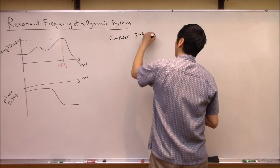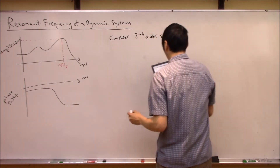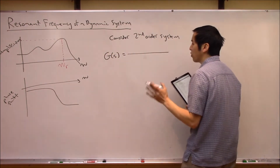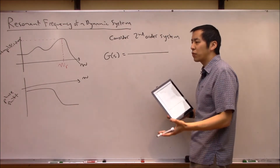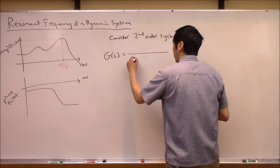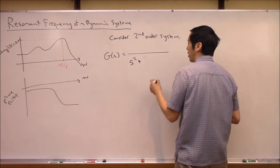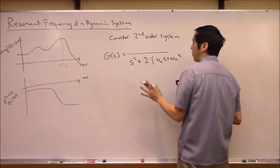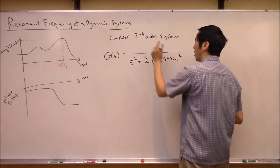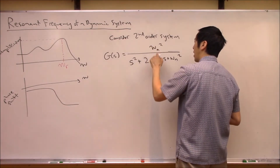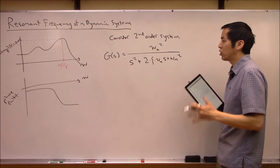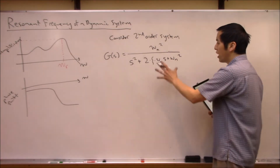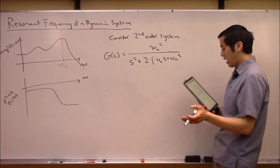Consider a standard second-order system using the transfer function representation. For a second-order system, there exist the concepts of natural frequency and damping ratio. Writing the denominator in standard form: s² + 2ζω_n·s + ω_n², and making the DC gain 1 by setting the numerator to ω_n². What we really care about is the natural frequency and damping ratio in the denominator.